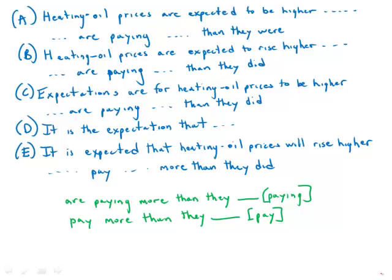This one is a challenging one because essentially the whole sentence is underlined. So let's first look at the word expected versus expectations. It appears as a verb, a verb, a noun, a noun, and a verb.